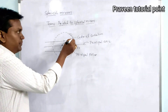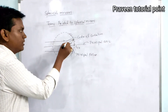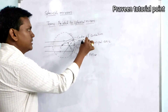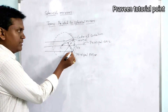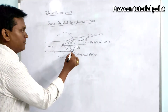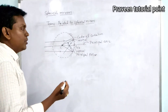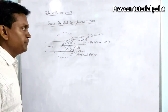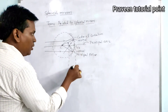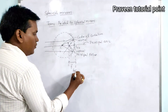If we draw a line from the point of incidence to the center of curvature, this line is called the normal. For any point of incidence, the line joining it to the center of curvature will be the normal at that point. The distance between the pole and the principal focus is called the focal length.